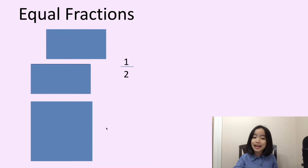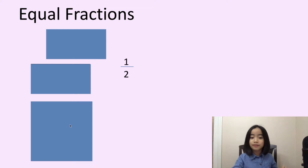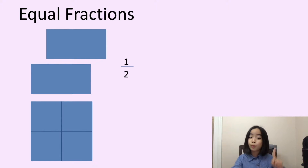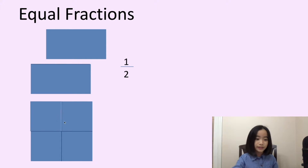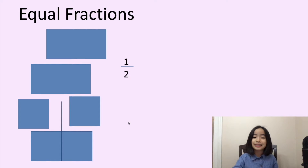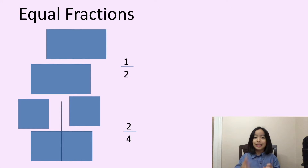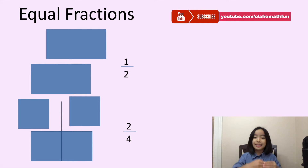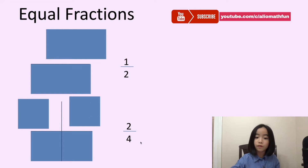Now, let's look at the second square. I am going to divide it into four equal slices, like this. Now, instead of taking one piece away, I am going to take two pieces away — one, two. This is known as two-fourths. As you can see, these fractions are equal because they are both taking half away. So, one-half equals two-fourths.